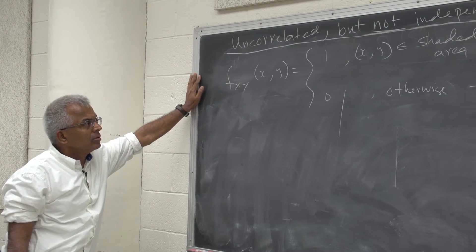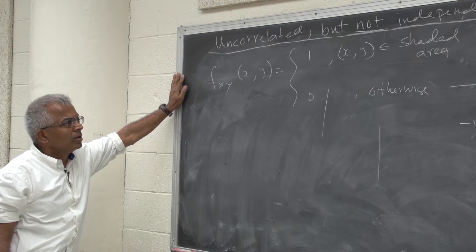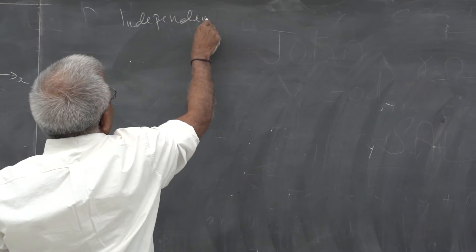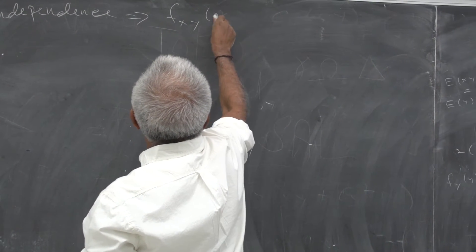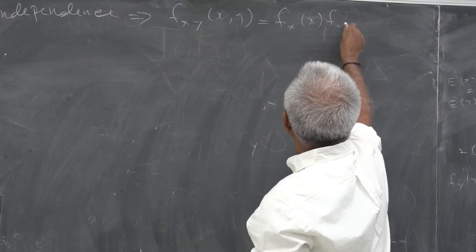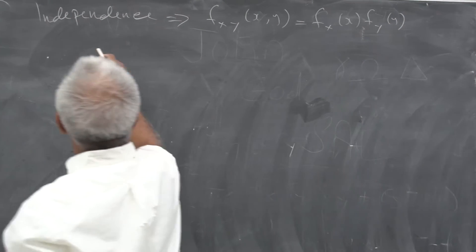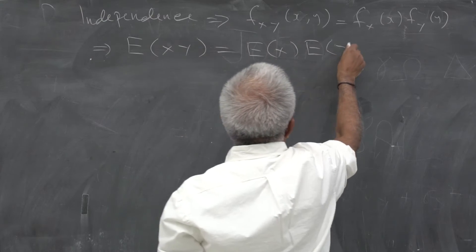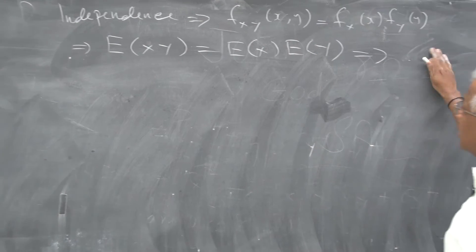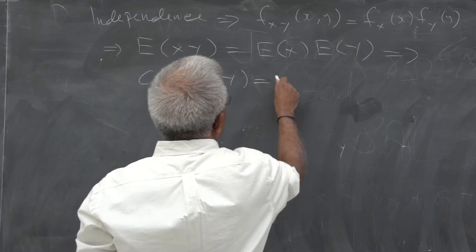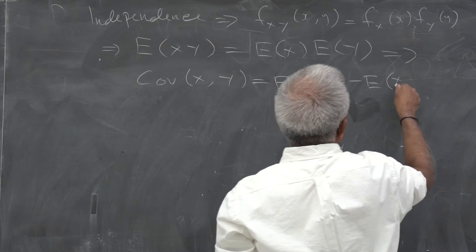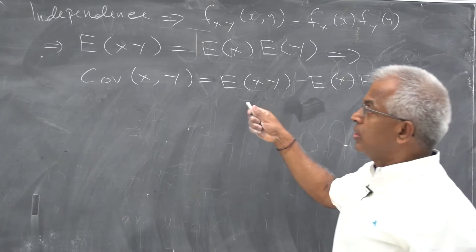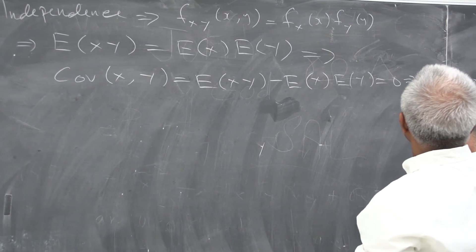Let's look at the notion of independence and uncorrelated. We have seen that independence implies uncorrelatedness, because independence means the joint density function is the product of the density functions. In this case, the expected value of XY equals the expected value of X multiplied by expected value of Y. So the covariance of X, Y is zero, because covariance equals E[XY] minus E[X]·E[Y] equals zero. If that is zero, then the correlation coefficient is zero — and that's what we mean by uncorrelated.